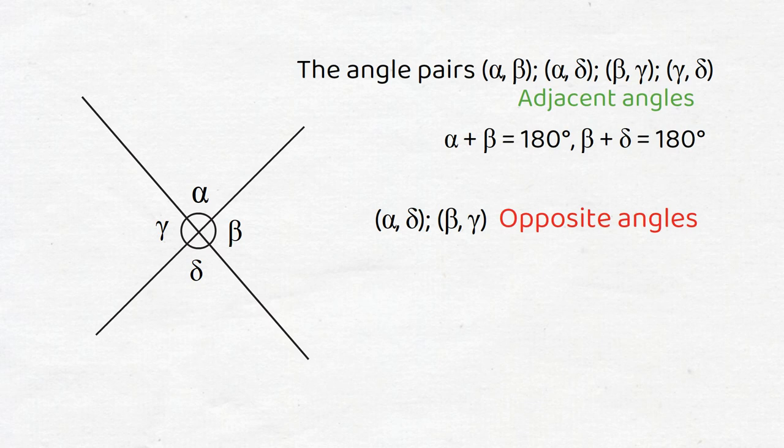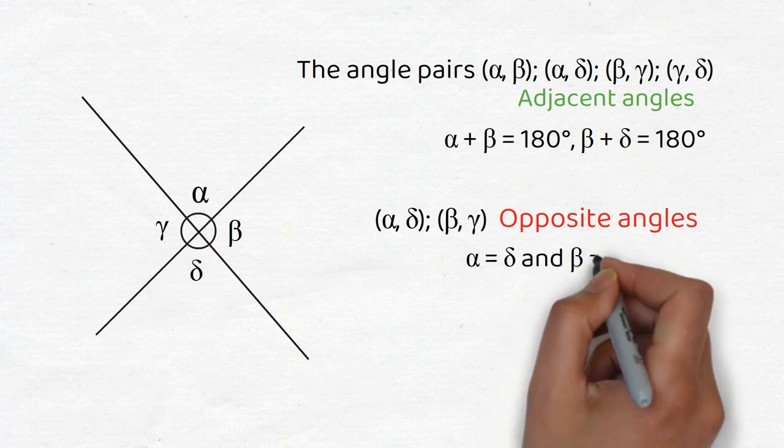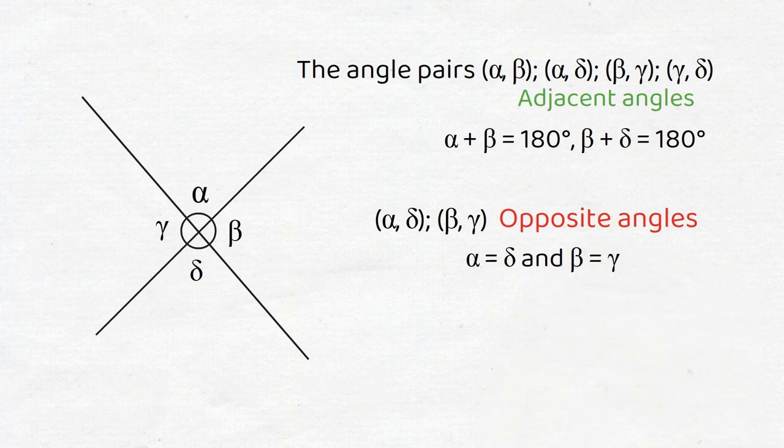From these relationships, it can be easily derived that opposite angles are always equal to each other. Thus, angle α is the same as angle δ, and angle β is the same as angle γ.